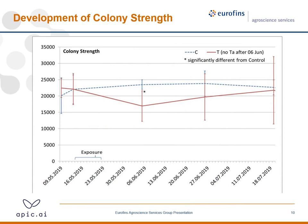Now to the hive strength and colony strength. Before the exposure started, the hives were very similar — between 20,000 and 25,000 bees. One month after the first feeding cycle, there was a significant reduction in hive strength in the treated group, but this reduction became smaller over time between treatment and control. There was no significant difference afterwards, but the variability in the treated hives was much higher than in the control hives.